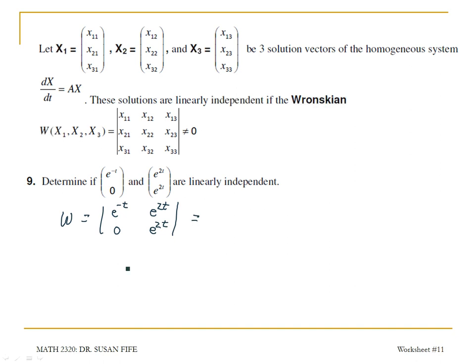And when I take the determinant, I'm gonna multiply e to the negative t times e to the 2t, and then subtract off the product of the backward diagonal, e to the 2t times 0, which is 0. So that gives me just this first product.